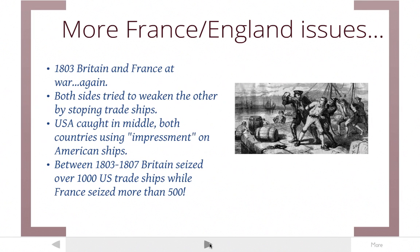Moving on to problem two: in 1803, Britain and France go to war again. Both sides try to weaken each other by stopping trade ships, and the United States is caught in the middle. The US wants to stay neutral, but when they trade with France, England impresses their ships, and when they trade with England, France impresses their ships. Between 1803 and 1807, Britain seizes and impresses over 1,000 US trade ships, and France seizes more than 500. In addition, both countries force captured sailors to serve in their navies, making England and France's forces much stronger.